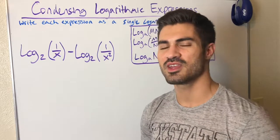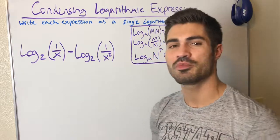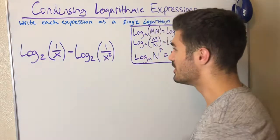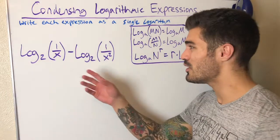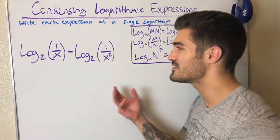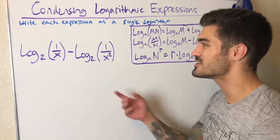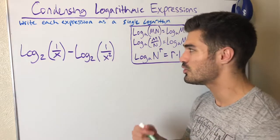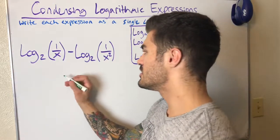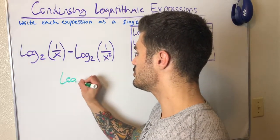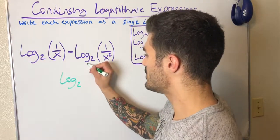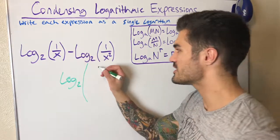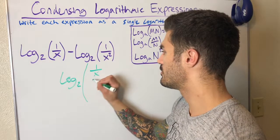We're just going to do a bunch of examples, and this is the kind of video where I encourage you to pause and try these on your own, then press play to check your answer. For this next one, we actually don't have any factors out in front that I need to rewrite as exponents, so I can just go ahead and combine. Since I have subtraction, it's going to turn into division within one single logarithm — same base, so I'm good. Log base 2 — I'll draw big parentheses here.